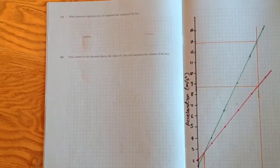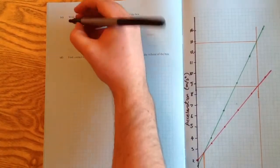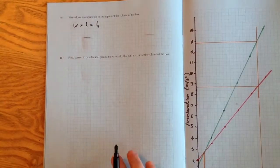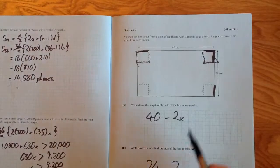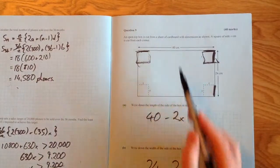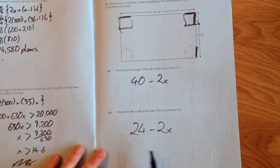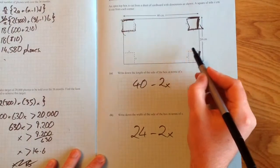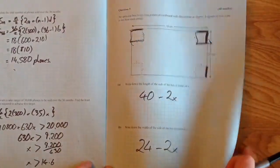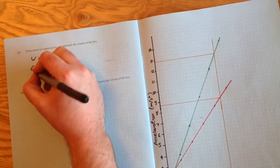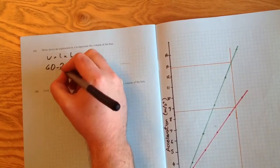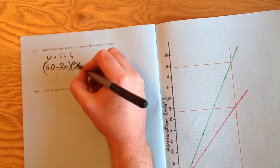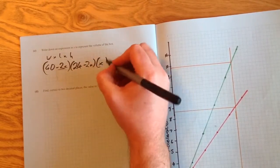Part c says to write an expression in x to represent the volume of the box. The volume of any box is width times length times height. Looking at the diagram, the length is 40 minus 2x, the width is 24 minus 2x, and the height is just x, since that's how high it will fold up. So we multiply (40 - 2x)(24 - 2x)(x).